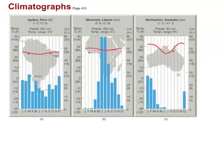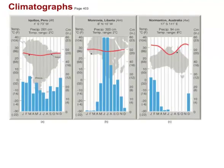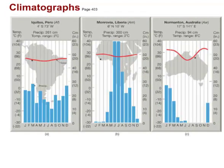One of the ways in which we make sense of places on the planet is to create what's called a climatograph, or sometimes just a climate graph of that region. We measure the precipitation as bars and we measure the temperature as a line.